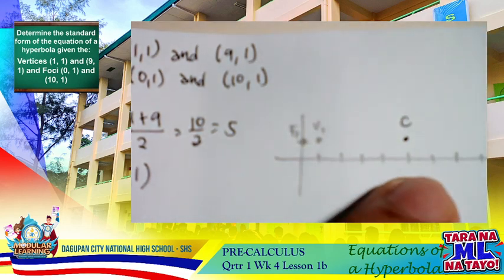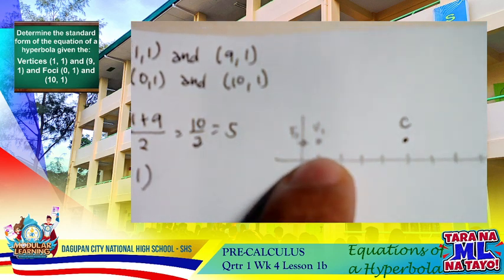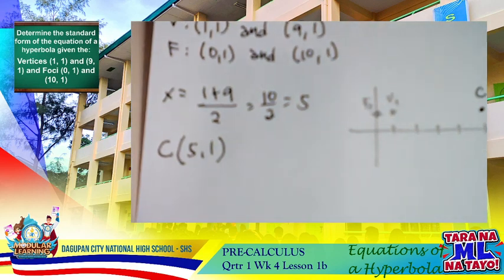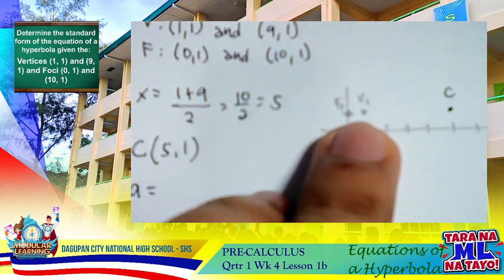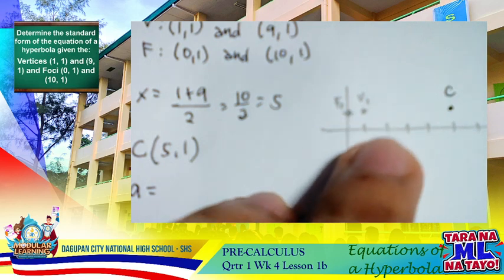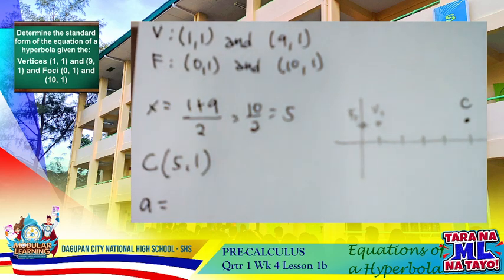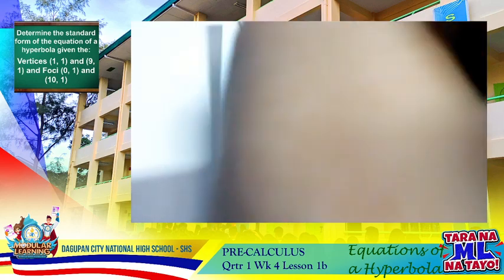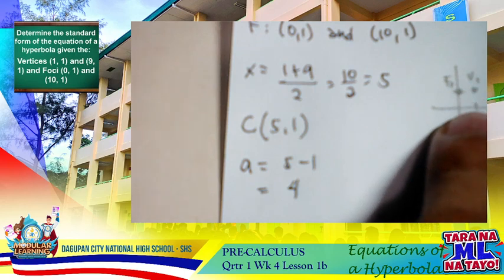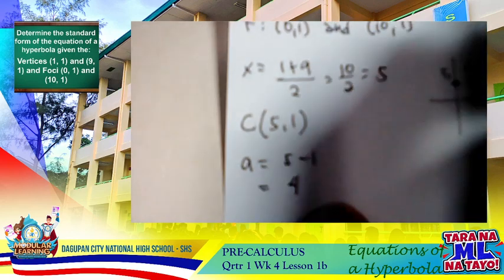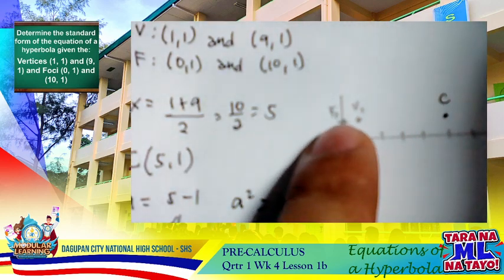Next, we find the distance from the center to the vertex, which is 'a'. Using subtraction: 5 minus 1 equals 4, so a = 4. Squaring this gives a² = 16, which is our major (transverse) axis value.